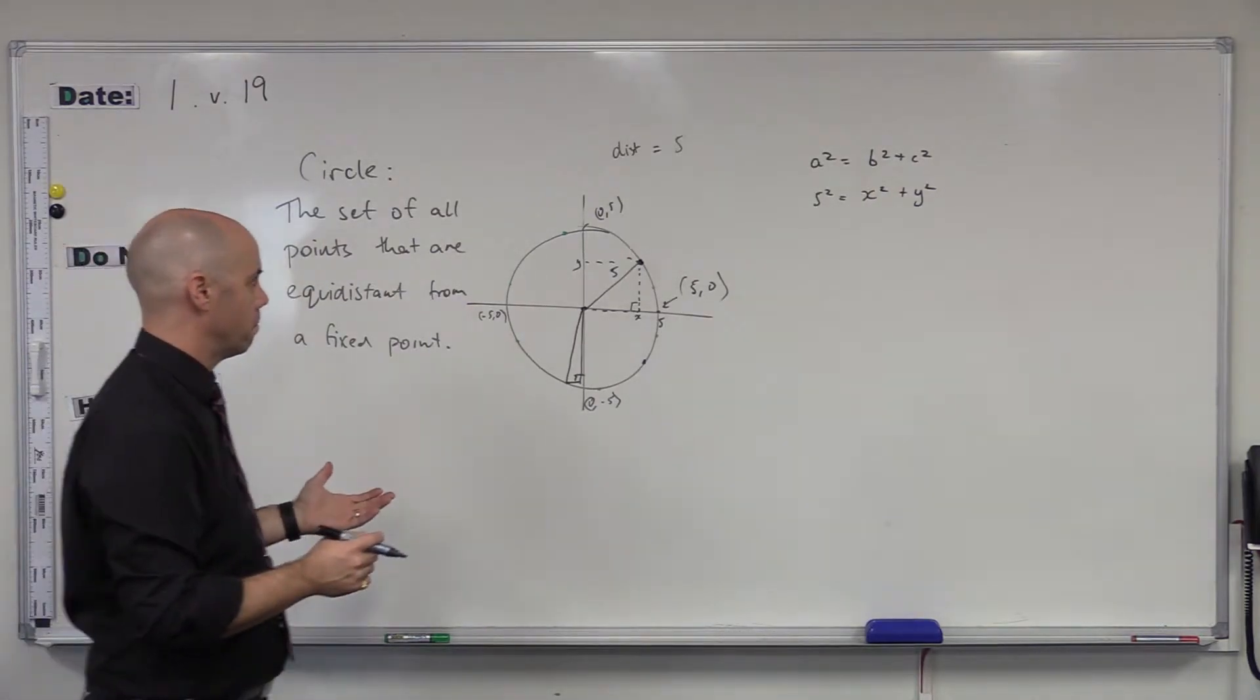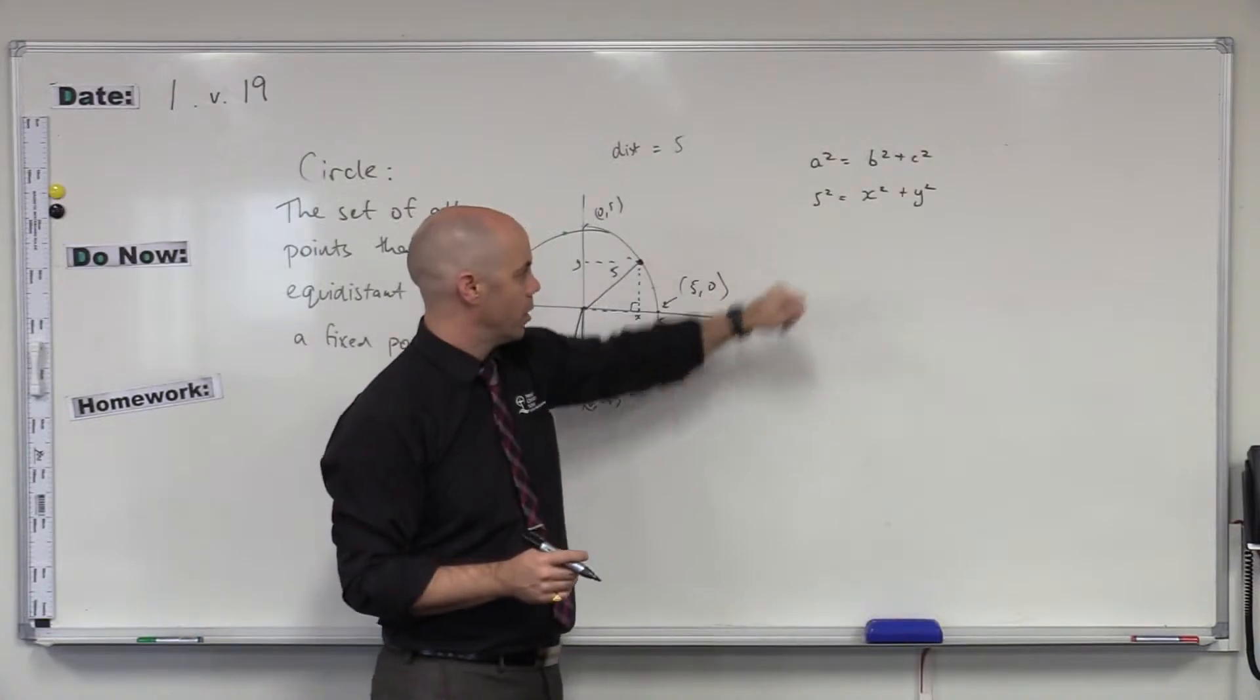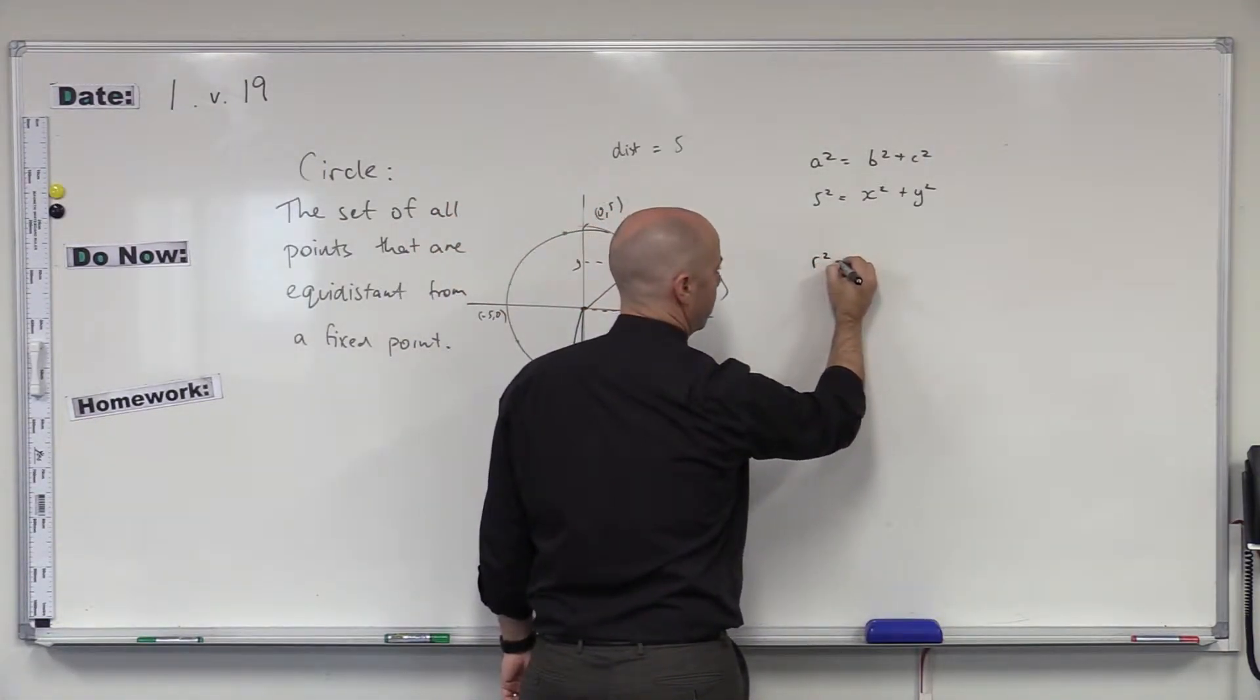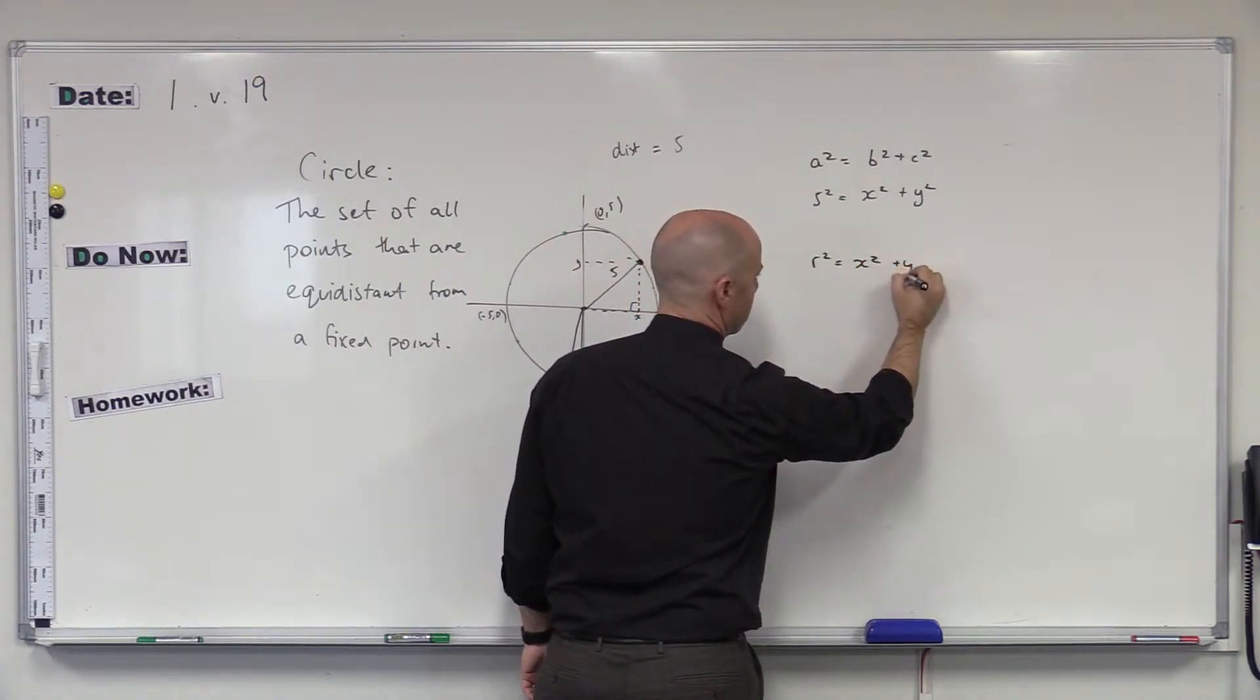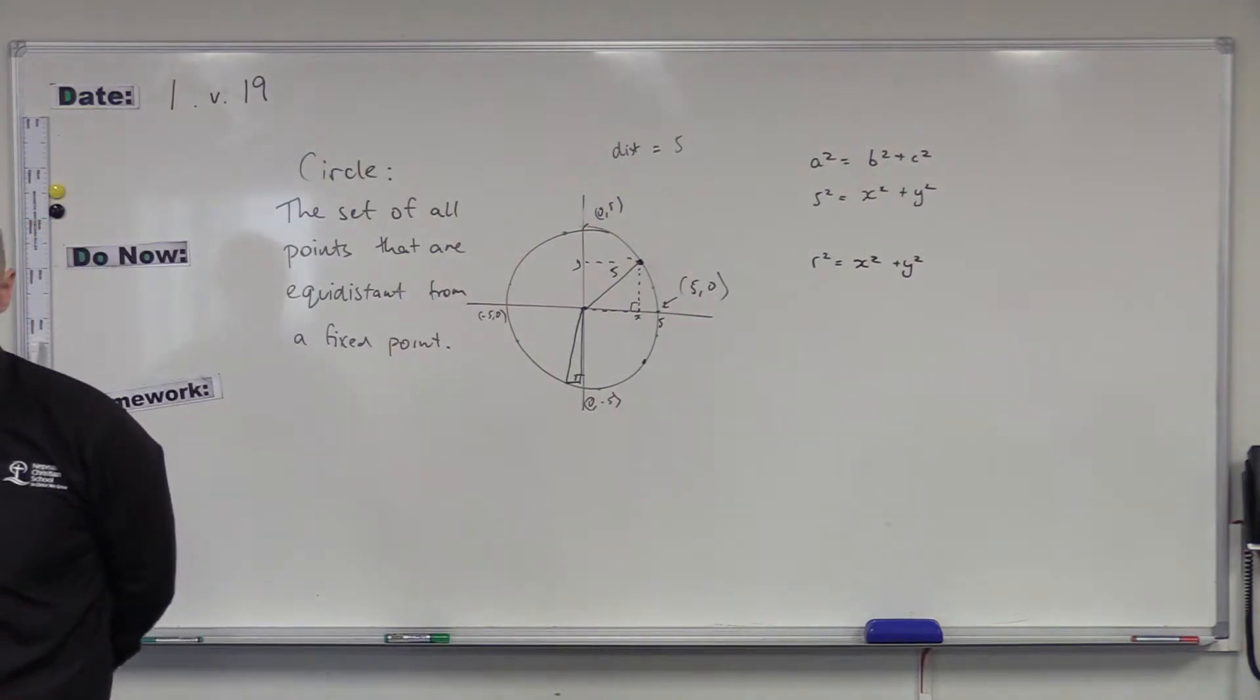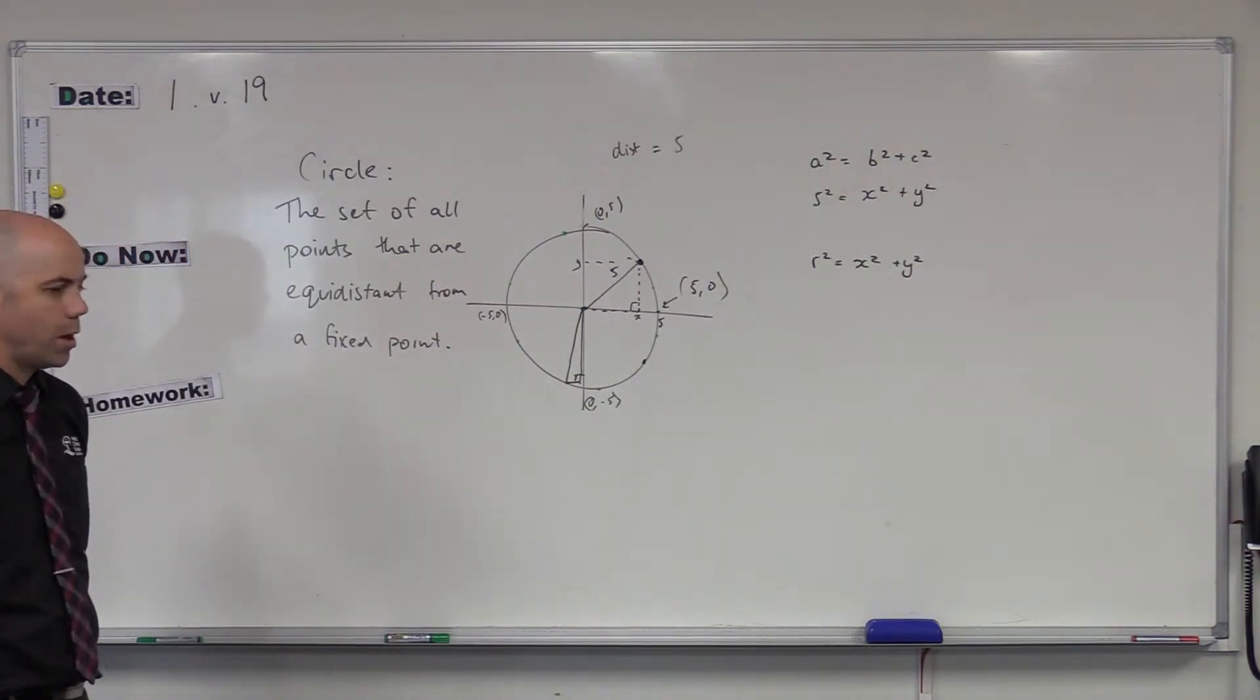That is the equation of a circle. Now, we've talked about five. If you want to write this in a really general form, whatever the radius is, that's the equation. R squared equals X squared plus Y squared.